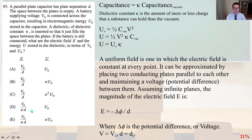93. A parallel plate capacitor has plate separation D. The space between the plates is empty. A battery supplying voltage V₀ is connected across the capacitor, resulting in electromagnetic energy, U₀, stored in the capacitor. A dielectric of the dielectric constant, kappa, is inserted so that it just fills the space between the plates. If the battery is still connected, what are the electric field, E, and the energy, U, stored in the dielectric in terms of V₀ and U₀?